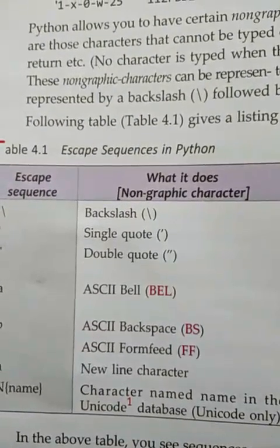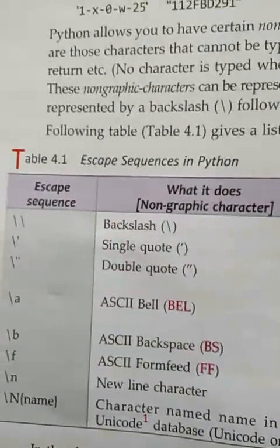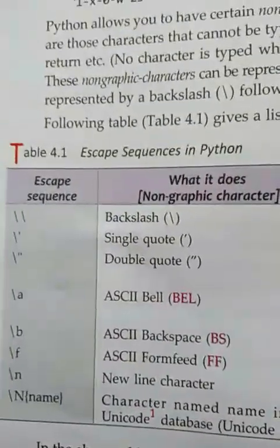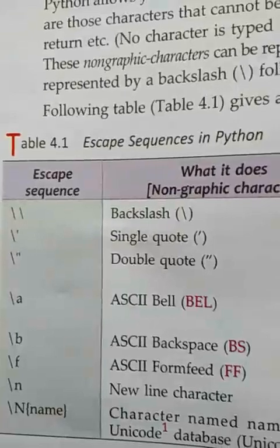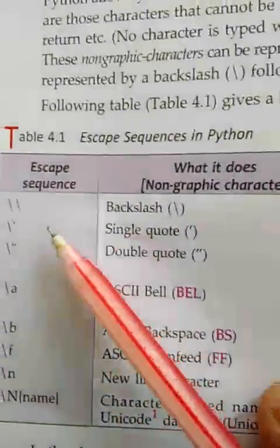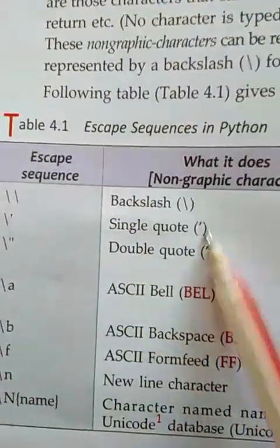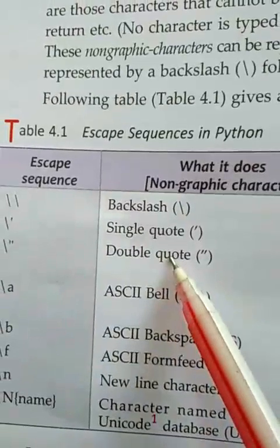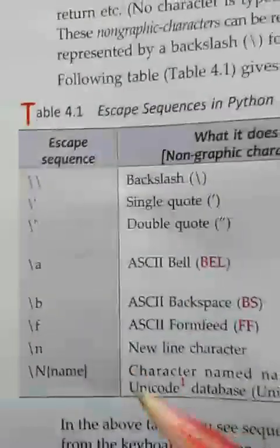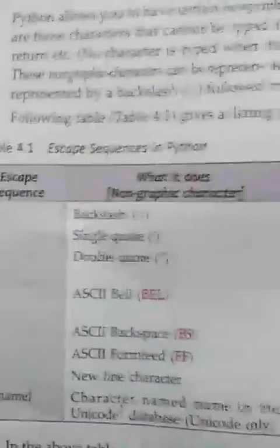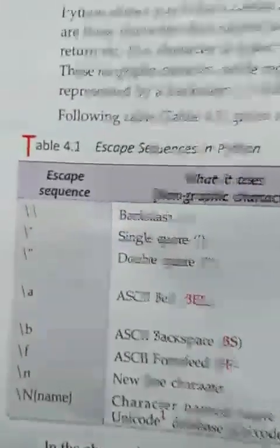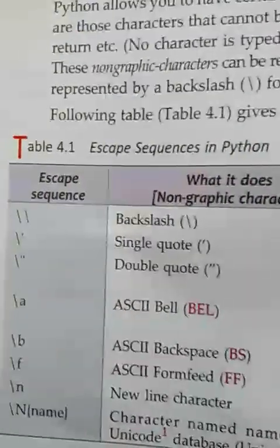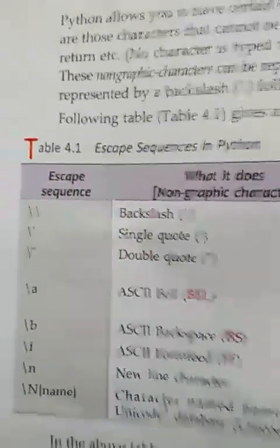The next topic is escape sequence characters. These are also called non-graphic characters because they do not print directly on the screen — instead we get their effect. For example, backslash with a single quote gives a single quote, backslash with a double quote gives a double quote. Backslash-n changes the line, and backslash-t gives a horizontal tab space. So \t, \n, \', and \" are the escape sequence characters most commonly used in Python.